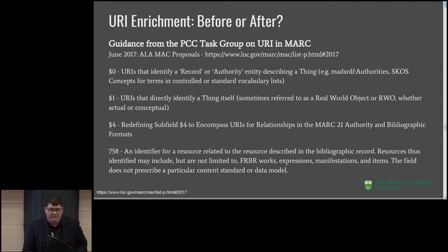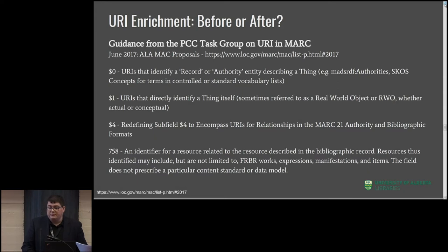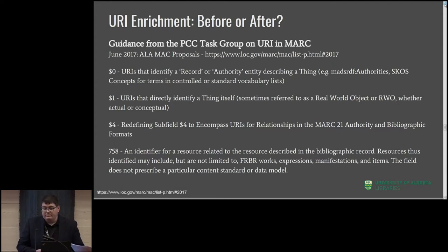One of the other examinations was looking at URI enrichment both before and after. We recently had very interesting guidance on the use of URI in MARC data from the PCC task group on URI and MARC. Back at the most recent MAC meeting at ALA Annual, three new proposals were passed: one for the use of subfield zero and subfield one in MARC data — subfield zero for URIs that identify a record or authority entity describing that thing, and subfield one for URIs that directly identify the thing itself, so real-world objects. A separate proposal redefines subfield four, defining it to encompass URIs for relationships in MARC data. And there's a brand new 758 field in MARC data for identifiers for resources relating to the resource described in the bibliographic record — primary resource identifiers. Think of OCLC work identifiers, URIs, as one example.